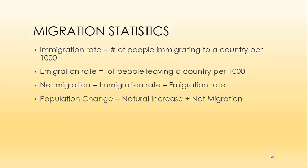In order to measure these trends and patterns, there are some basic metrics we want to use. First is immigration rate, which is simply the number of people immigrating to a country per thousand people. Then we have emigration rate, which is the number of people leaving a country per thousand. By using these two statistics, we can calculate net migration — simply immigration rate minus emigration rate — telling us the total number of people coming into a country or leaving. We can then use net migration along with the natural increase to calculate total population change, as these are the only two ways a country can change its population.